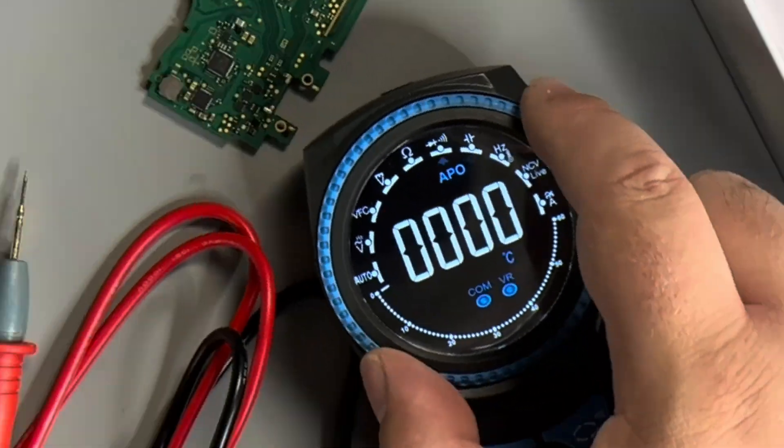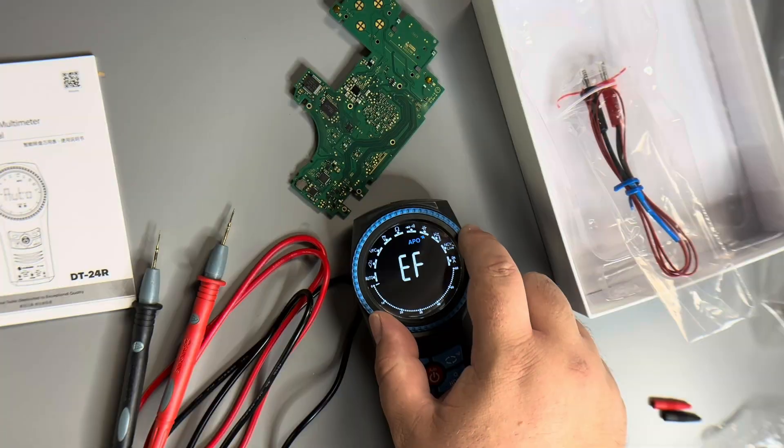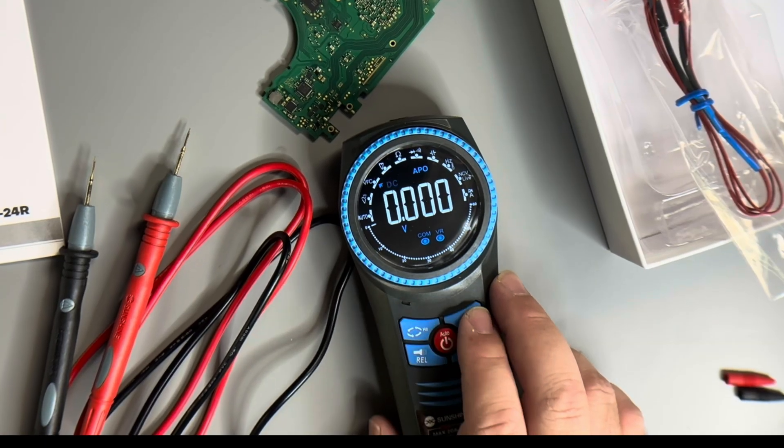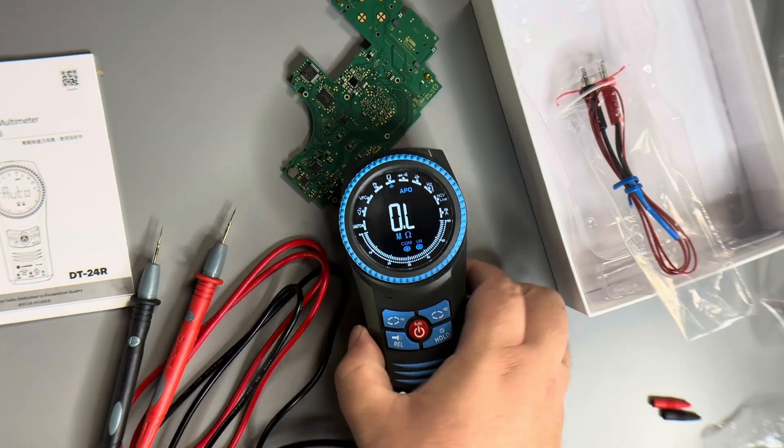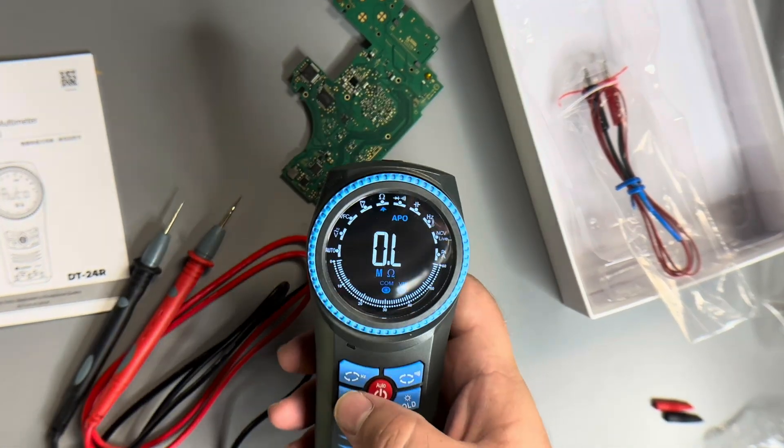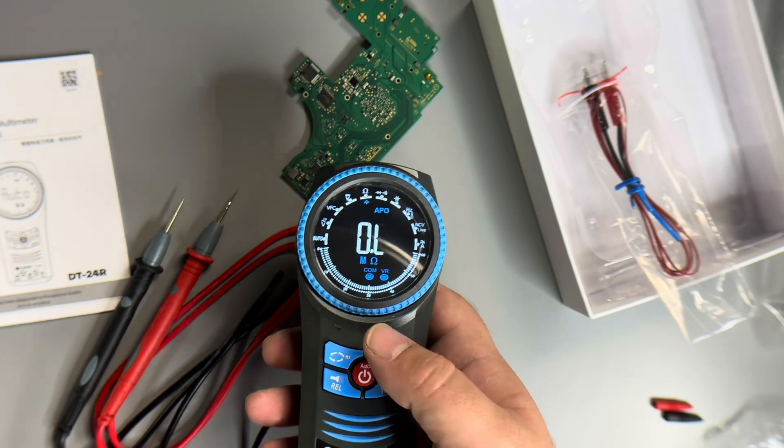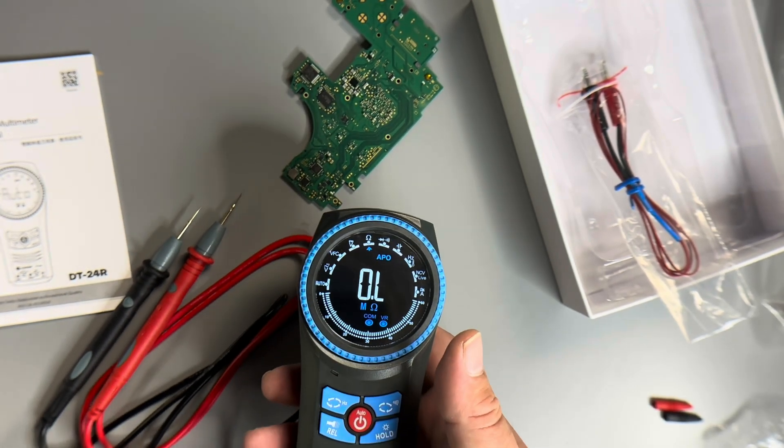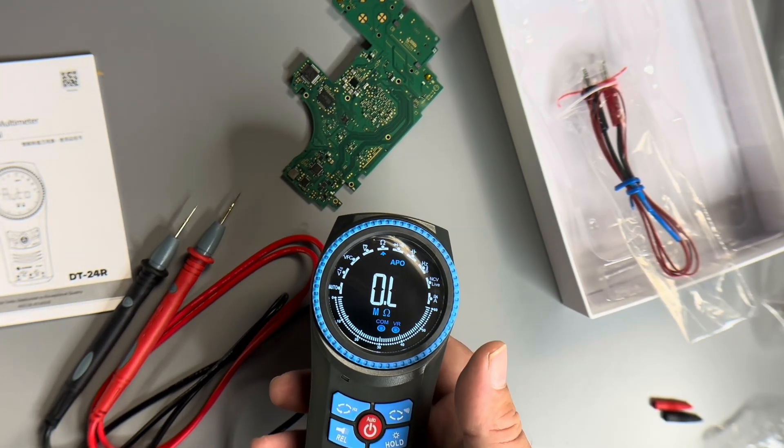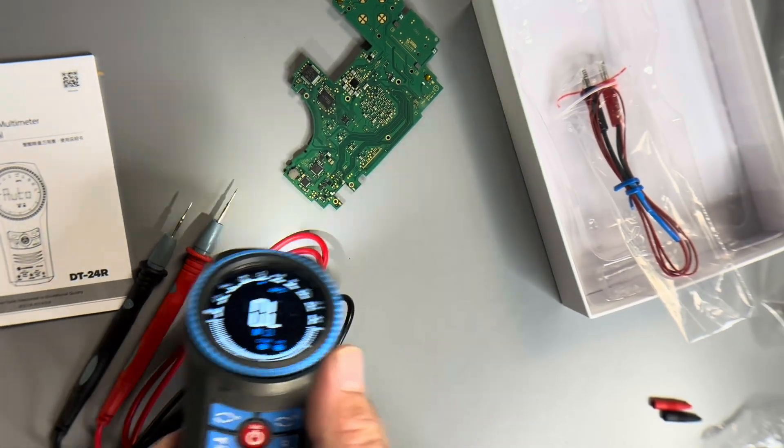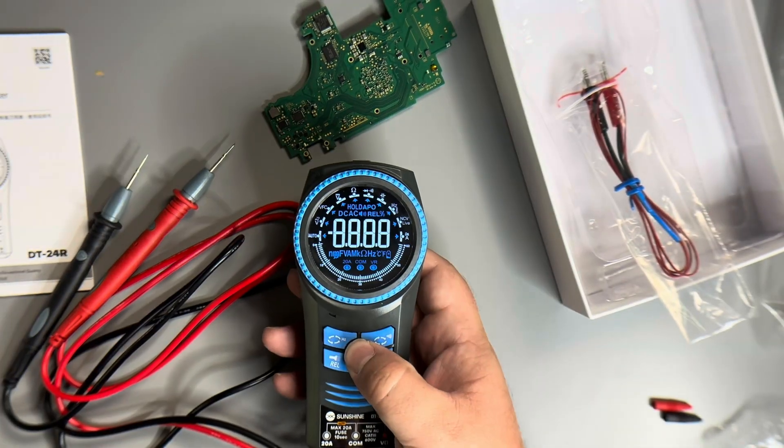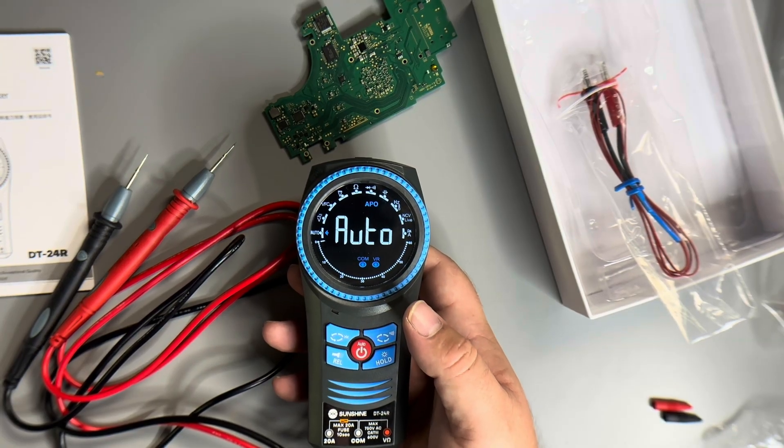So you've got the dial up here that allows you to change what you're testing for. You can also just toggle back and forth with the left and the right buttons here. And this could definitely come in handy if you are, say, a technician in a field, and you're trying to test a capacitor on like an AC unit, or you're in a house, you actually have a flashlight, which is convenient.